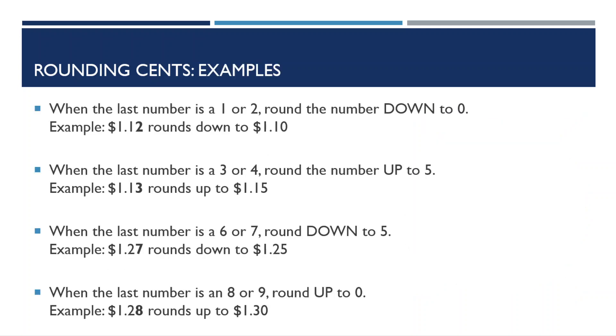Let's now take a look at how we round cents to make up for the lack of penny. When the last number is a one or two, round the number down to zero. So, $1.12 rounds down to $1.10. When the last number is a three or four, round the number up to five. $1.13 rounds up to $1.15.